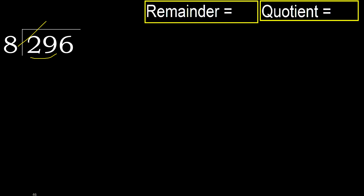8 multiplied by which number is nearest to 29 but not greater? 8 multiplied by 4 is greater, multiplied by 3 — 24 is not greater. Subtract: 29 minus 24 is 5. Next.